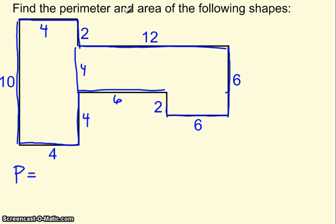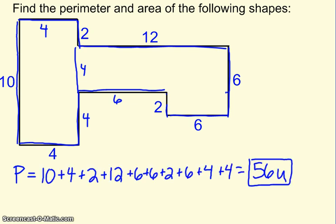Just be careful. Make sure you don't miss any of the sides. So I just made a list where I listed all of my sides. You should do the same thing. I started on the left-hand side with 10 and went clockwise around. So I had 10 plus 4 plus 2 plus 12 plus 6 plus 6 plus 2 plus 6 plus 4 plus 4. That gave me 56 units. Don't forget your label of units.